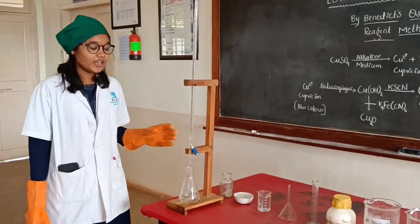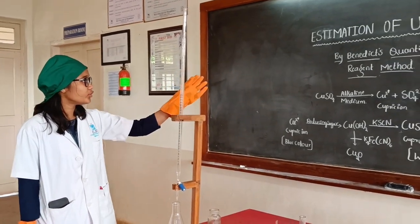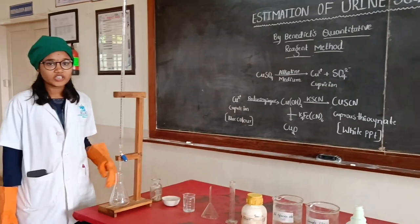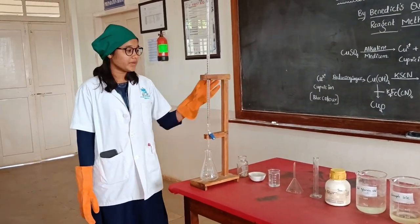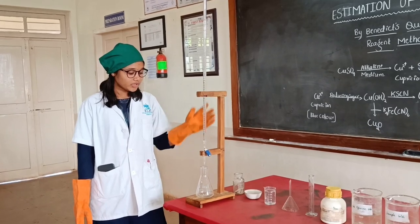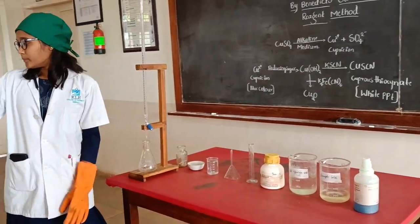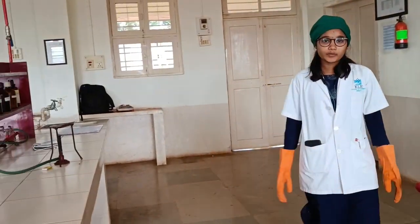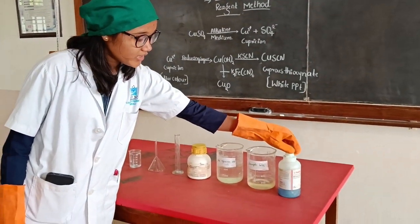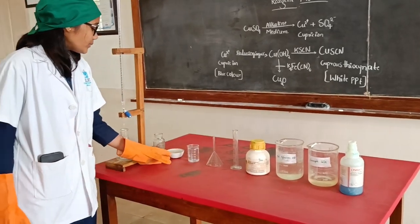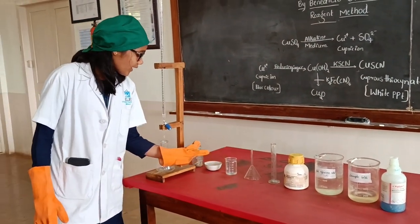Hello everyone, let us start the experiment — estimation of urine sugar by Benedict's quantitative reagent method. The apparatus used are burette stand, burette, conical flask, funnel, measuring cylinder, burner, and tripod stand. The reagents used are Benedict's quantitative reagent, sodium carbonate, 20 ml of distilled water, and pumice chips.